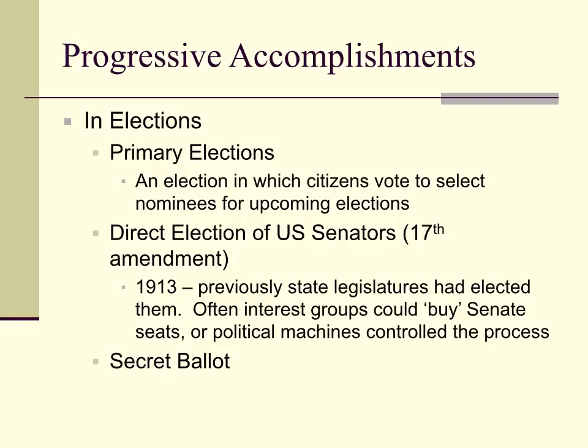In elections, you now have primary elections where citizens can vote to select nominees for upcoming elections. So instead of having 20 nominees for the Republican Party on the ballot in November, you'll have a primary election in May or June which will narrow down the field to one or two candidates. Interest groups used to buy Senate seats or political machines controlled the process — it wasn't democratic.